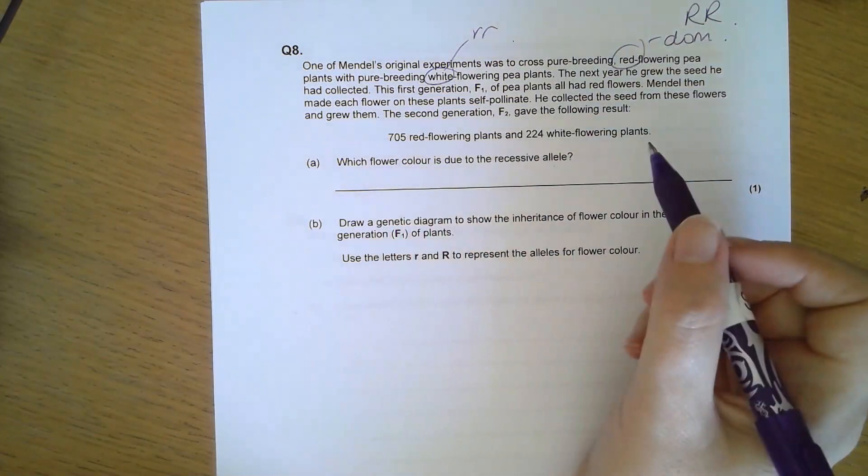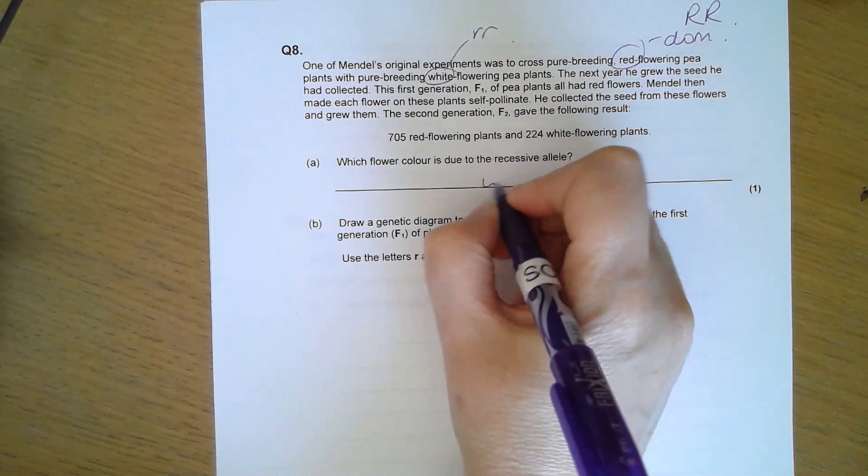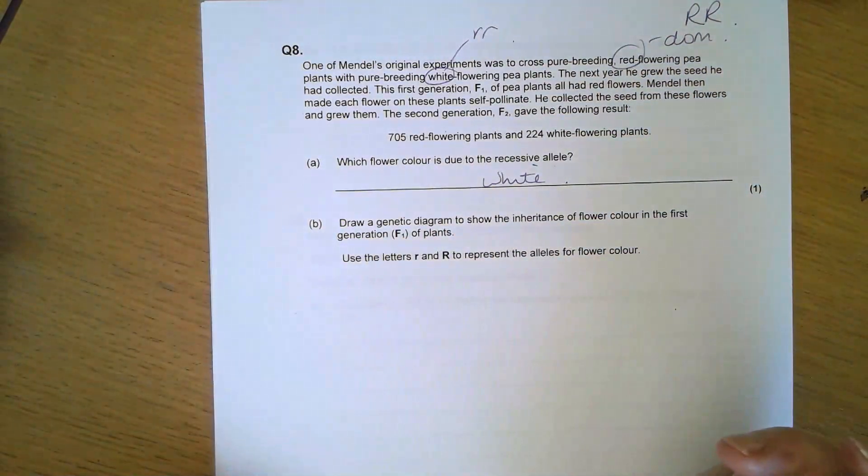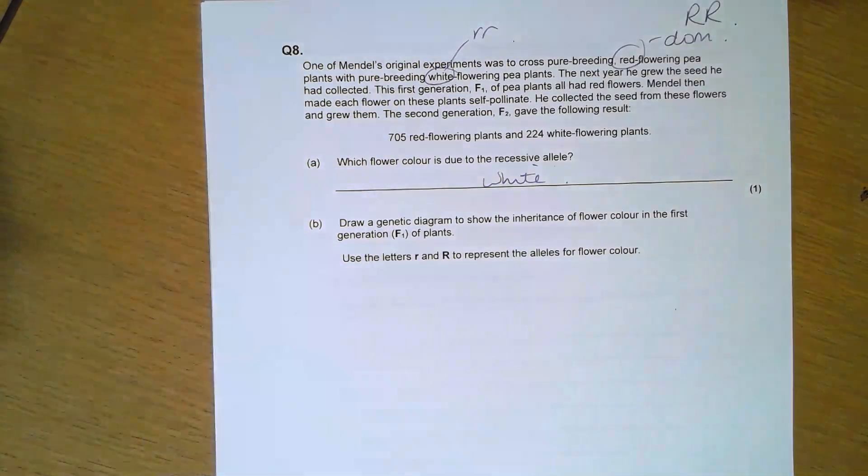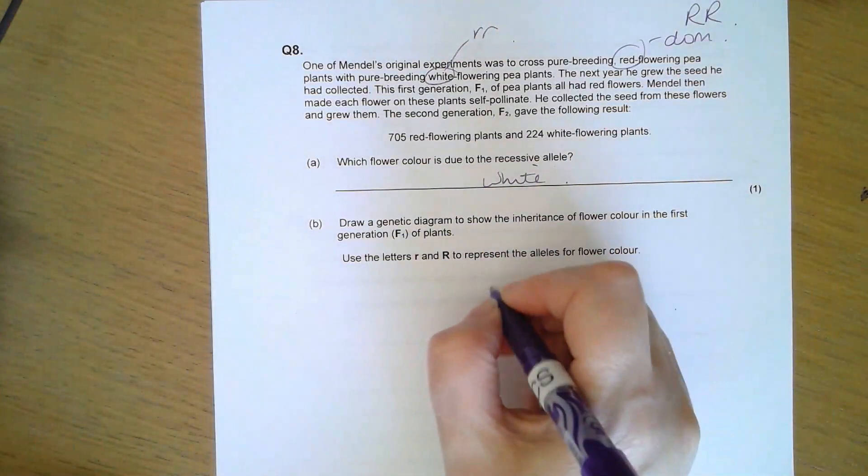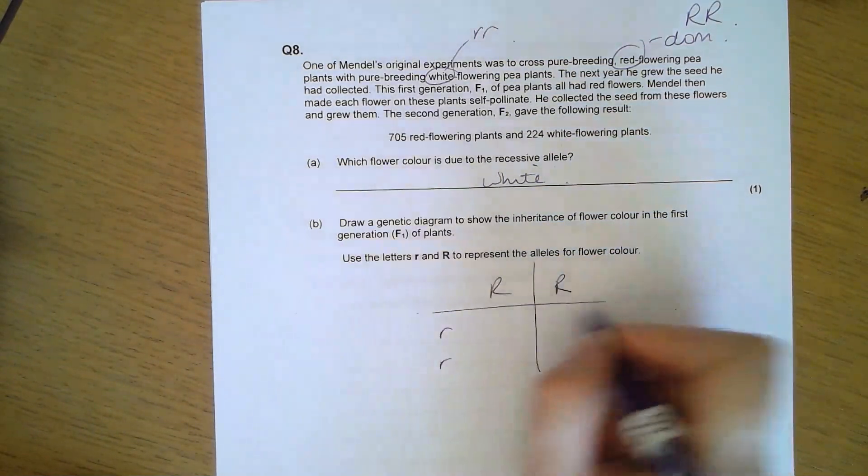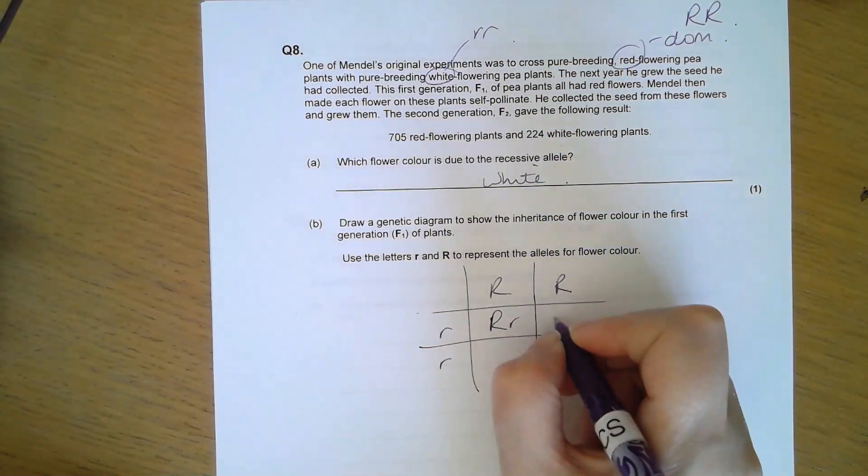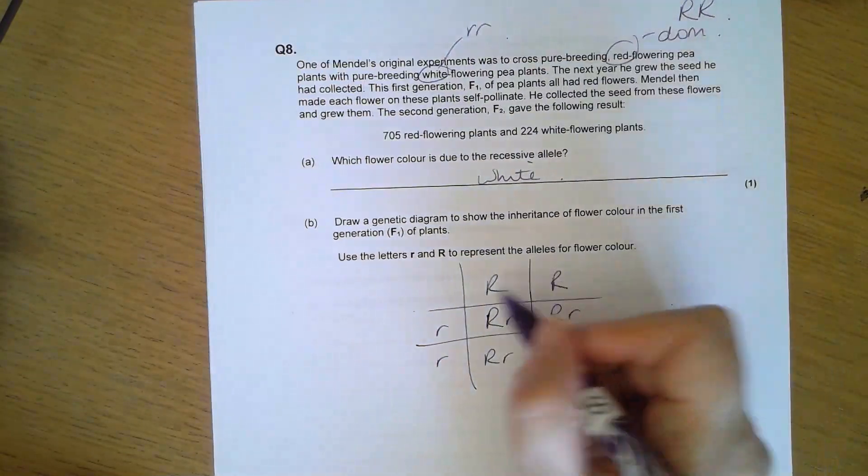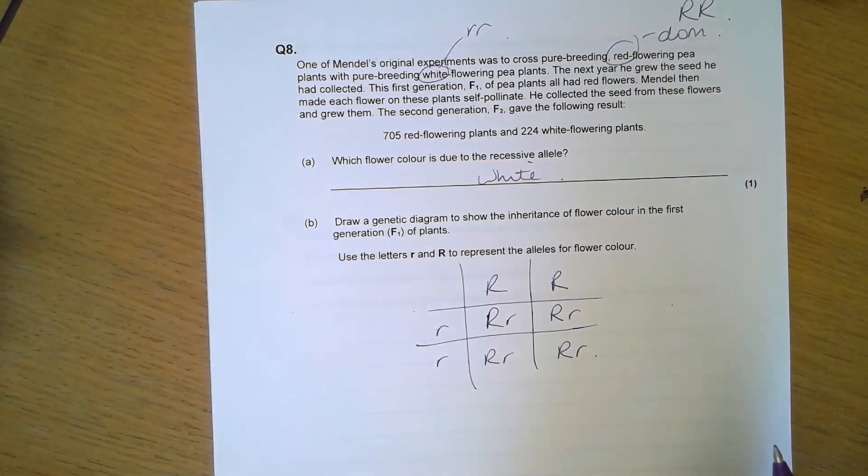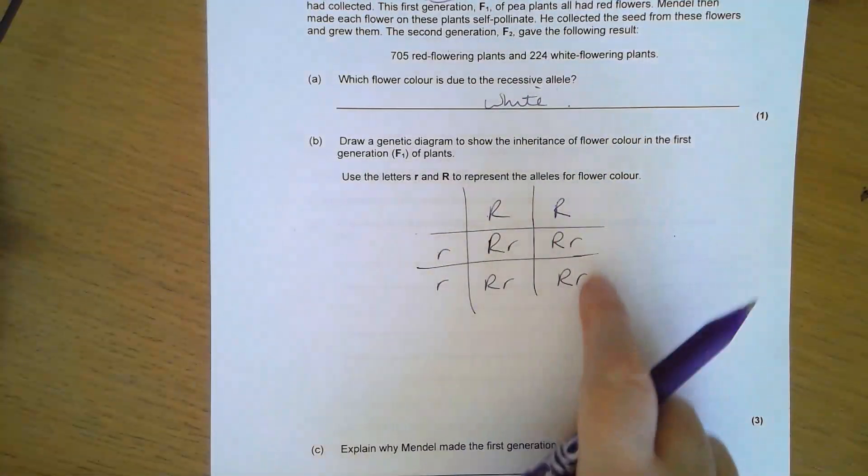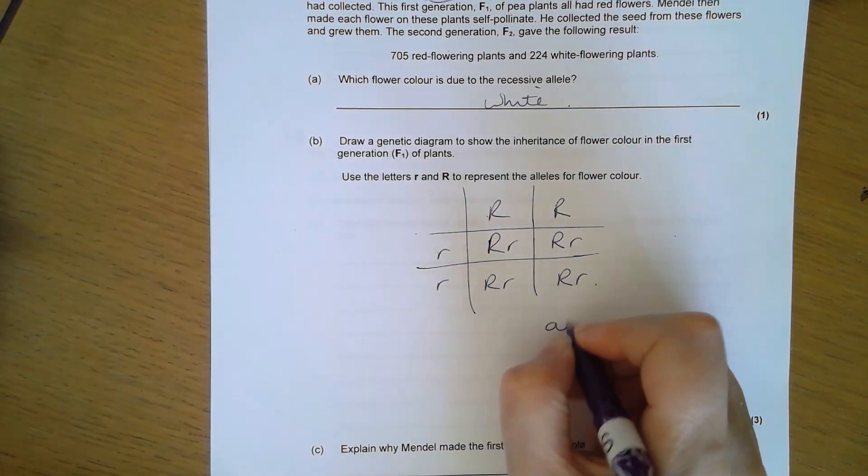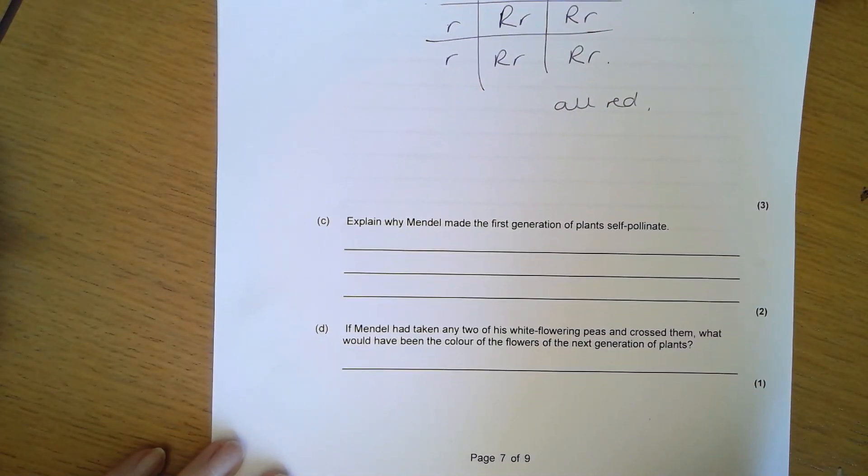He made each flower on the plant self-pollinate, then collected the seed and grew them. He got what looks like about a three to one ratio of red to white. Which flower colour is due to the recessive allele? White. Draw a genetic diagram to show the inheritance of flower colour in the first generation of plants using little r and big R. For the first generation we cross pure breeding red with pure breeding white.